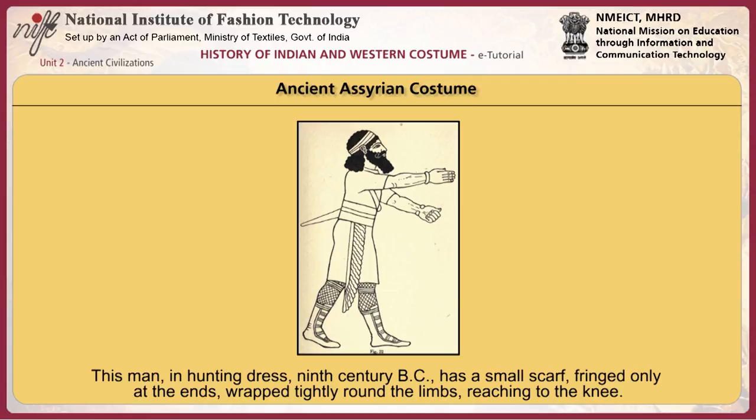This man in hunting dress, 9th century BCE, has a small scarf, fringed only at the ends, wrapped tightly around the limbs, reaching to the knee. The point to be noted in this figure is the arrangement of a fringe drapery which goes round once at the waist, is thrown over the shoulder, and hangs down the back.